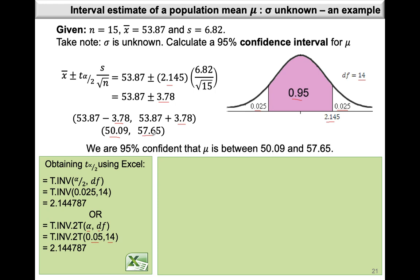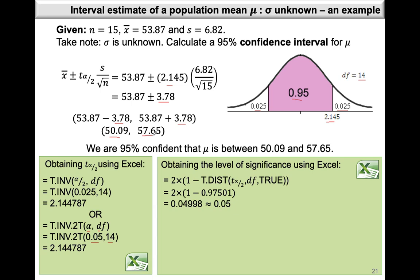We are 95% confident that the mean is between 50.09 and 57.65. Alternatively, you can say the probability that the mean is between 50.09 and 57.65 is 0.95. If we're interested in finding the level of significance using Excel, we can use the T.DIST function: =2*(1 - T.DIST(t-alpha-over-2, df, TRUE)). This equals 2 times 1 minus 0.97501, giving us 0.04998, which is approximately 0.05 when rounded.